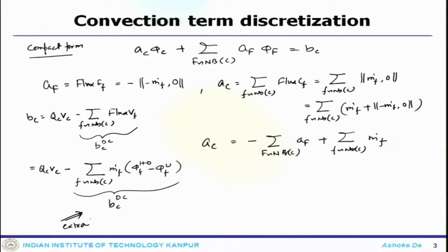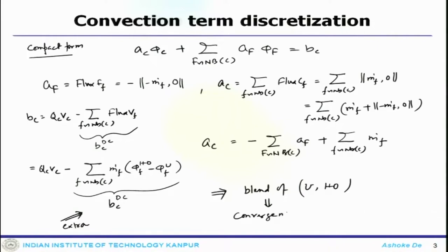This deferred correction technique results in an equation for which the coefficient matrix is always diagonally dominant, since it is formed using an upwind scheme. So the coupling procedure is simple to implement. However, as the difference between the face values calculated with the upwind scheme and those calculated with the higher order scheme becomes larger, the convergence rate diminishes — essentially because it is a blend of upwind and higher order scheme.